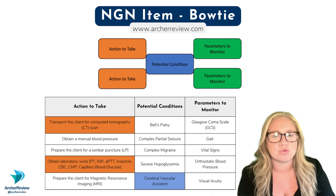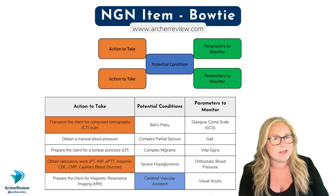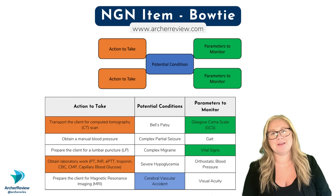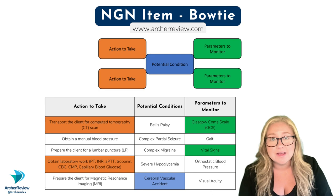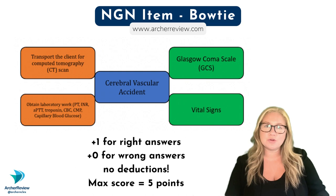Based on a stroke and getting a CT and labs, what's going to tell you if this is getting better? It's the Glasgow Coma Scale and your vital signs — easy, quick, and it'll let you know if this stroke is improving or getting worse. With all of your bow ties, you're getting a point for correct answers, no points for incorrect answers, and no deductions. The maximum you'll be able to get is five points.